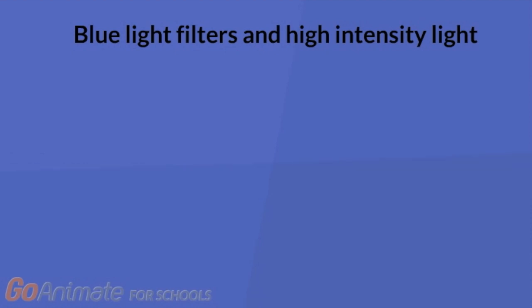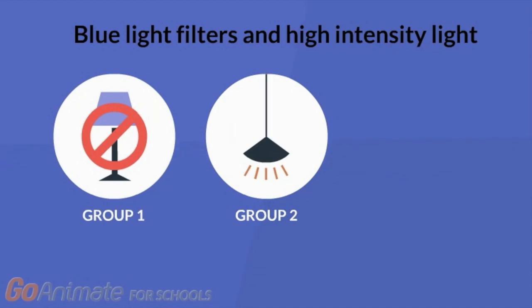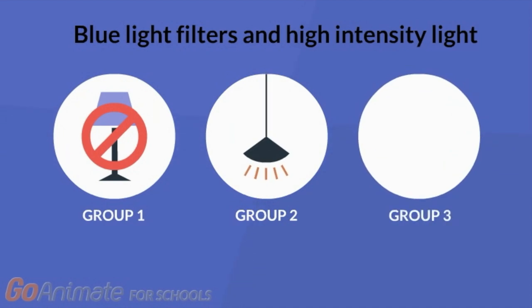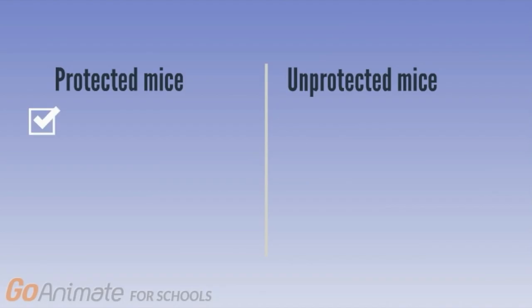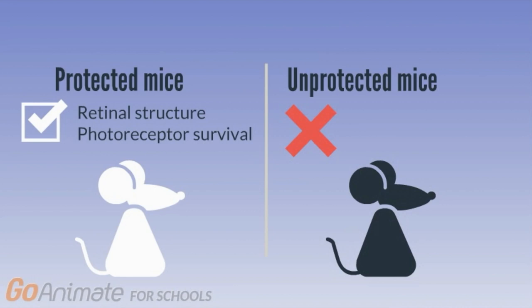A study examined the usefulness of blue light filters when exposed to high intensity. They examined three groups of mice. One group was not exposed to any light, group 2 was exposed to high intensity visible light, and group 3 was exposed to the same light as group 2 while also being protected by a blue light filter. The researchers reported better overall retinal structure and greater photoreceptor survival in mice that were protected with the filter.